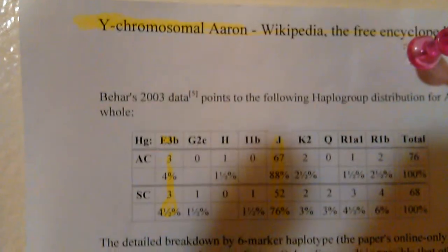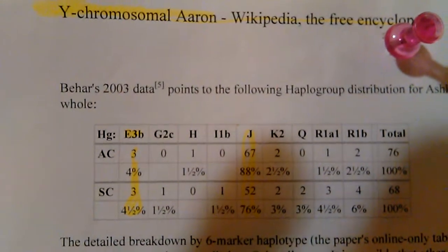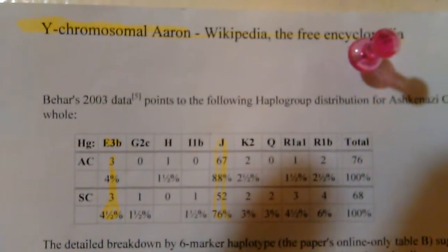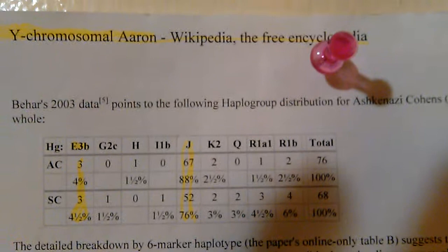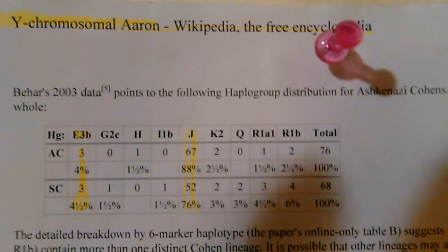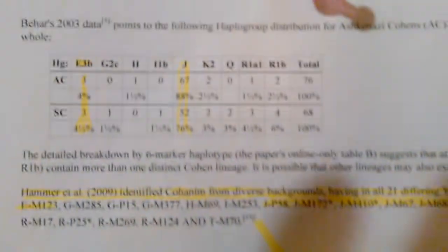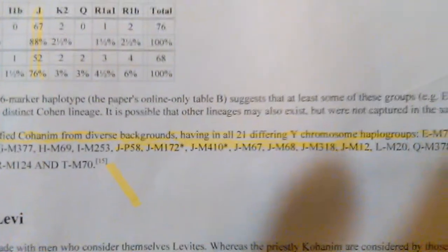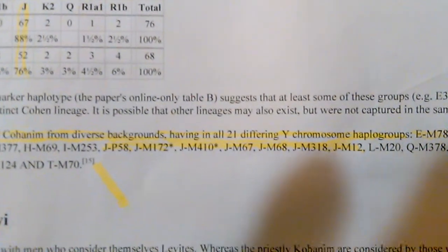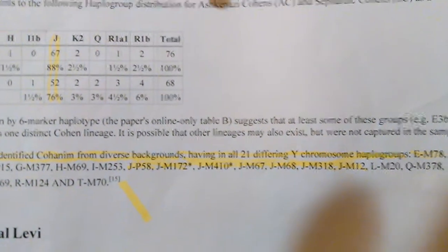Staying with this Y chromosome Aaron — I just showed you the 4.5% of haplogroup E3B. I also looked at haplogroup J, which is the highest percentage at 76%. You can see I have 7 markers highlighted in haplogroup J, and I found U175 in all of those haplogroups.